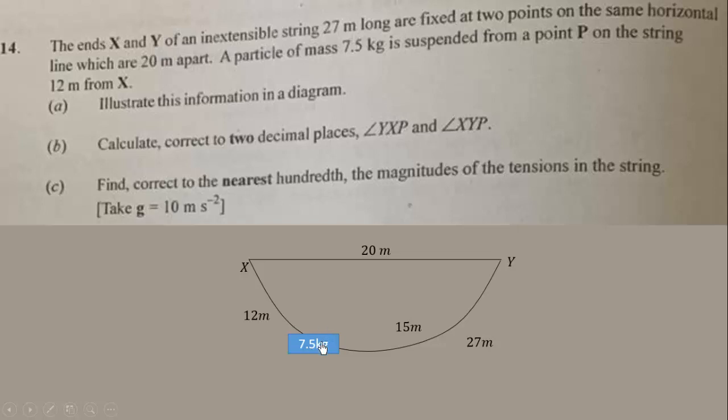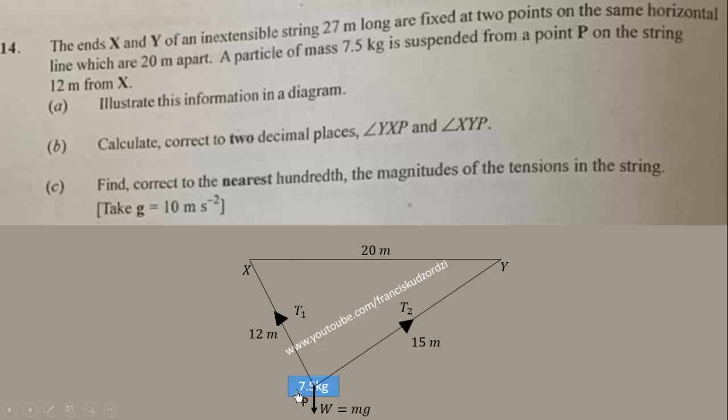When we leave this, the mass is going to exert some weight on the string so there will be some kind of tension exerting upwards. The distance from X to P is 12 meters, and the distance from Y to P will be 15 meters, because the string cannot extend—the total length of the string will still be 27 meters, that is 15 plus 12 meters. It is the weight that stretches the string like this, and the tension forces are acting in the opposite direction.